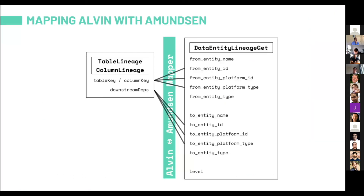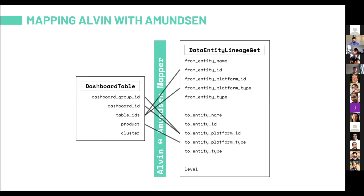On a conceptual level, we had to massage the data from our own lineage model to the table and column lineage models that Amundsen has. You can see on the right side our model, which is super general to ensure platform agnosticism. We converted the Alvin keys into an Amundsen key that Amundsen could understand and then aggregated the downstream dependencies. We had to do the same thing for dashboards — for us, dashboards are the same entity as a table or column in our model, and we mapped that into the dashboard table relationship in Amundsen.